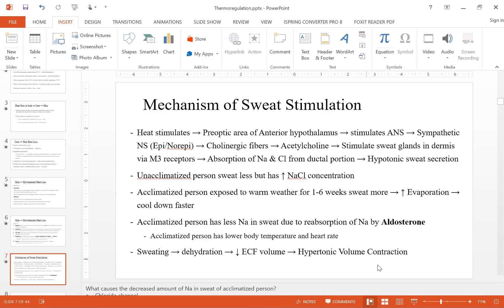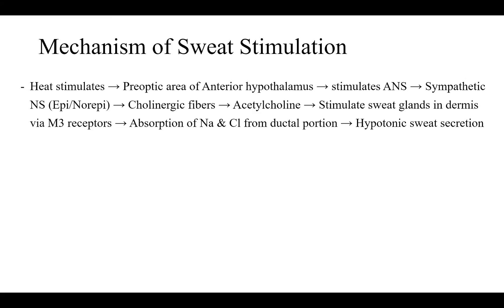Now we're going to talk about the mechanism of sweat stimulation. Heat stimulates the pre-optic area of the anterior hypothalamus, which senses the warm temperature of the blood and stimulates the autonomic nervous system. The sympathetic nervous system gets activated, which stimulates cholinergic fibers, and acetylcholine is secreted, which stimulates sweat glands in the dermis via M3 receptors.